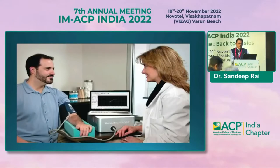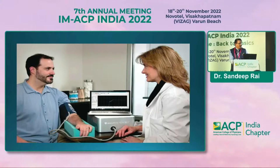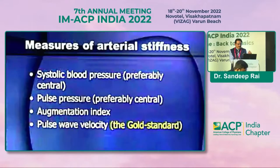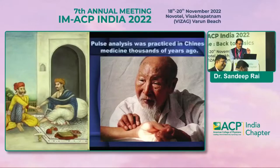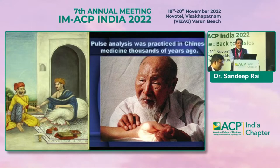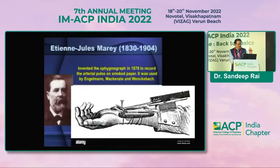The second measure gaining importance after endothelial dysfunction is pulse wave velocity, which is the gold standard measure of arterial stiffness. The pulse was actually an integral part of examination by Ayurvedic physicians, Unani physicians, and Chinese physicians. Jules Marey invented the sphygmograph and was also analyzing pulse waves on smoked paper, trying to calculate blood pressure by that method.